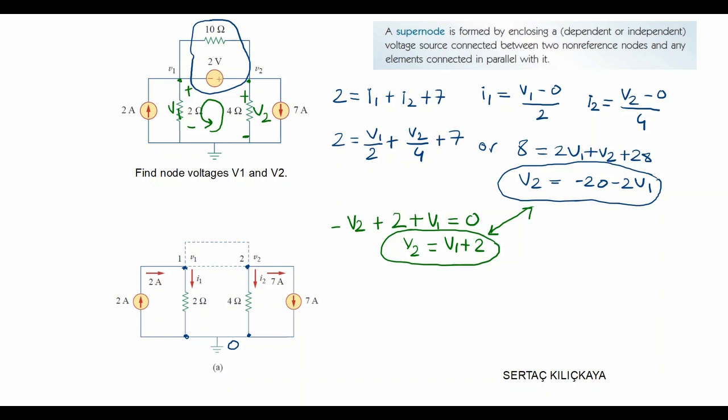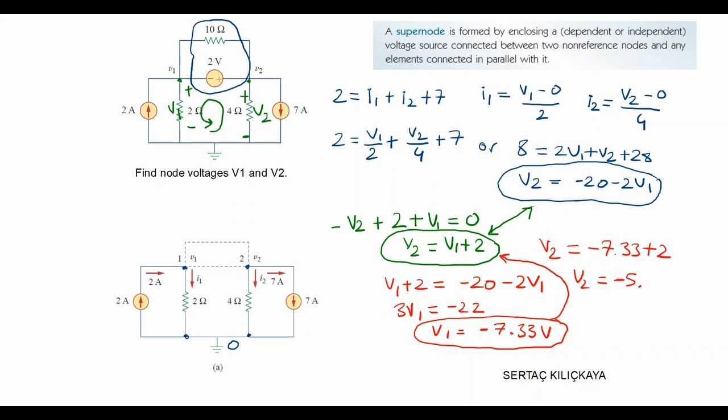And if we equate those two equations, we can just get the result V1. V1 plus 2 equals minus 20 minus 2V1, 3V1 equals minus 22 and V1 equals minus 7.33 volts. And if we substitute V1 into this equation, we can also get V2 as minus 7.33 plus 2 volts and V2 equals minus 5.33 volts.